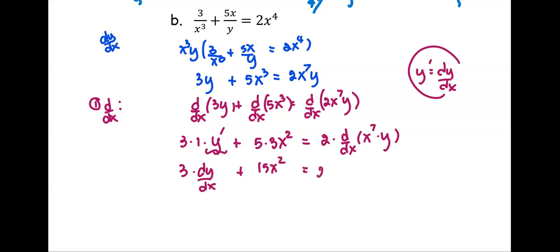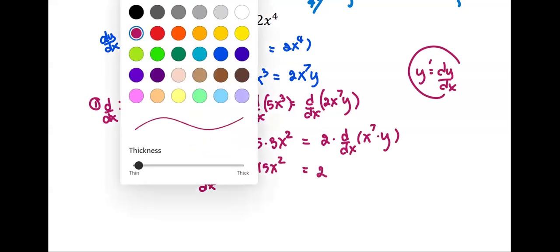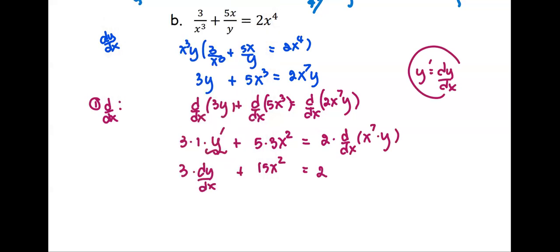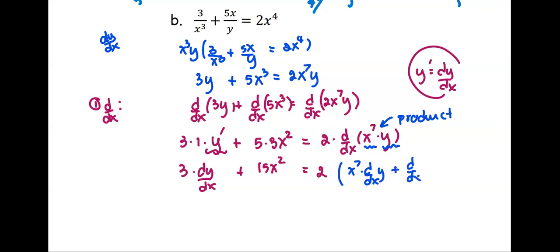On the right-hand side, we apply the product rule. We have the first function x to the seventh and the second function y. The product rule gives us: the first function times the derivative of the second function, plus the derivative of the first function times the second function.